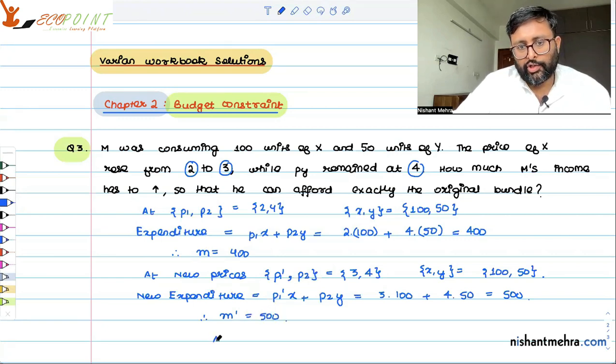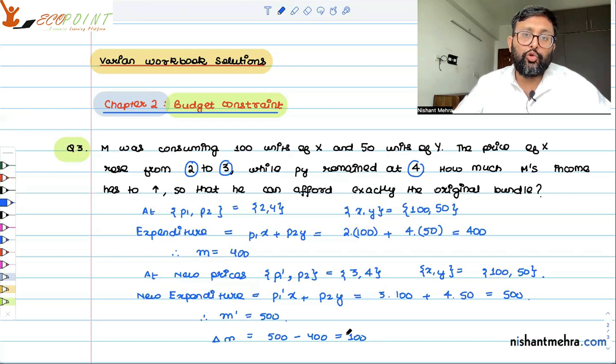So the change in income should be 500 minus 400, which is 100. So if you still want to consume the same original bundle at the new higher prices, you should have 100 as more income. So your earlier income was 400, now your income should be 500 so that you can afford the original consumption.